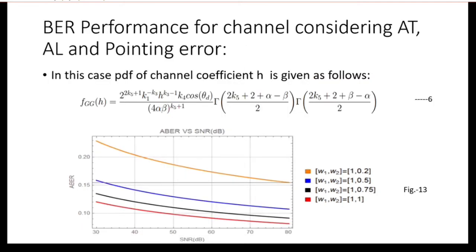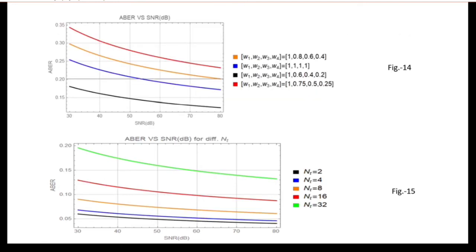Now we consider atmospheric turbulence, attenuation loss, and pointing error together. The PDF of the channel coefficient is given in equation 6. Figure 13 shows the ABER versus SNR performance for the two-transmitter, one-receiver case — again, system performance improves when moving toward uniform bits. Figure 14 shows the four-transmitter, one-receiver case. Figure 15 shows the multiple-transmitter, one-receiver case, where system performance degrades as the number of transmitters increases. So there is a trade-off between spectral efficiency and bit error rate performance.